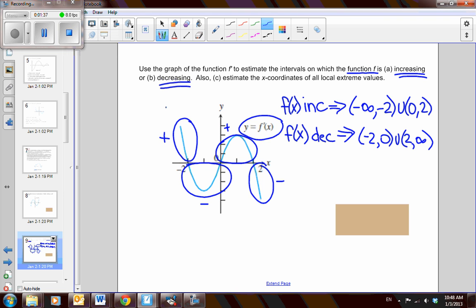Great, now let's answer the last part. Estimate the x-coordinates of all local extreme values. Well, we know that a maximum will occur when the first derivative changes, right, a maximum looks like this. So it occurs when the slope changes from a positive to a negative.